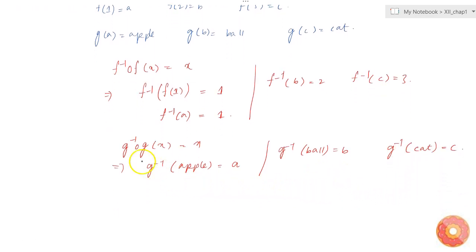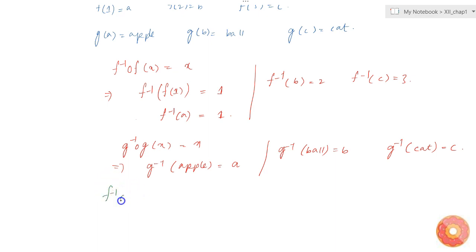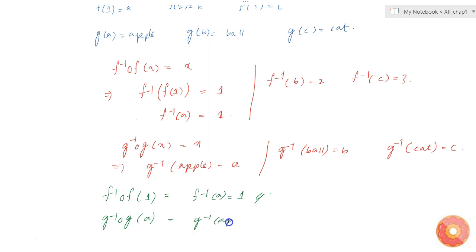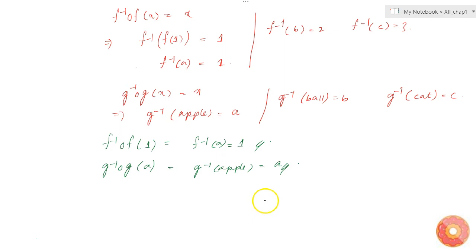Now let's verify these are actually inverses. For f: f⁻¹(f(1)) = f⁻¹(a) = 1. So f is invertible. Similarly for g: g⁻¹(g(a)) = g⁻¹(apple) = a. So g is also invertible because we found inverse functions that satisfy the condition.